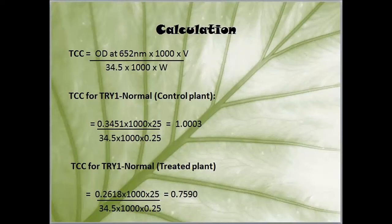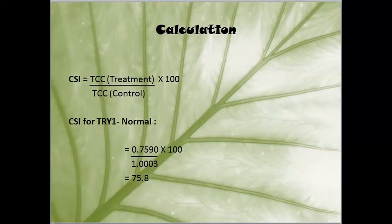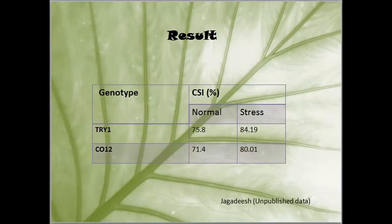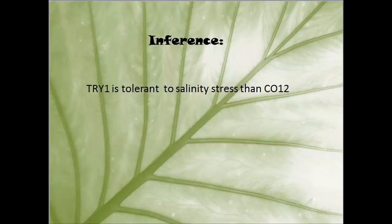The calculations for the Tilchivan normal plant are shown here. The OD values are substituted; the volume of the sample is 25 ml and weight is 0.25 g. From the calculations, TCC values of treatment and control are used to determine CSI values. CSI values for Coatwell varieties are calculated similarly. From the results, the CSI values of normal and stress-subjected plants for the Tilchivan variety are higher than those of the Coatwell variety, indicating that Tilchivan is more tolerant to stress than Coatwell.